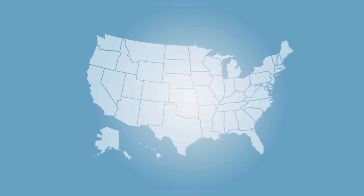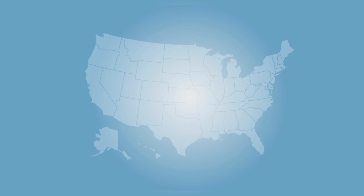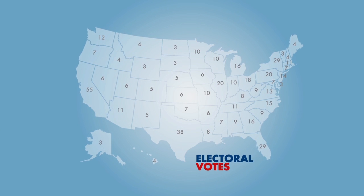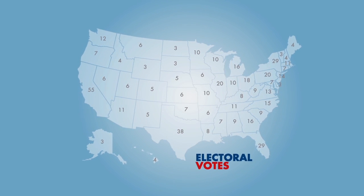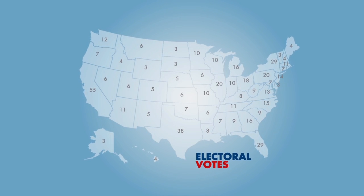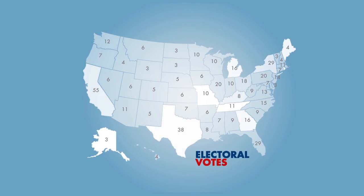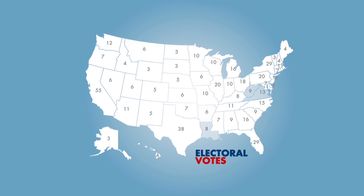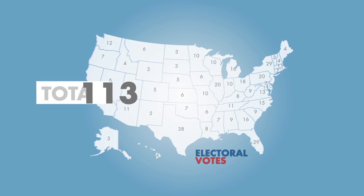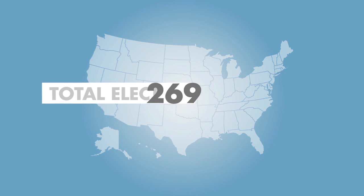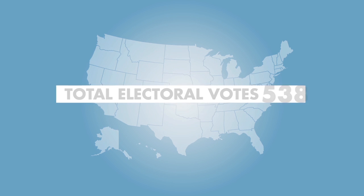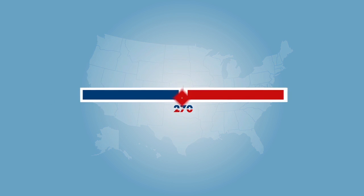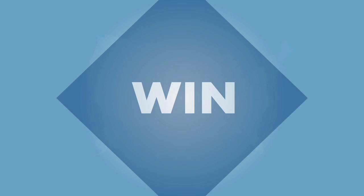Votes are counted state by state, each with a given number of electoral votes. The candidate with the majority of the popular vote takes the electoral votes in each state. The total electoral count is 538. The first person to get to 270 wins the presidency.